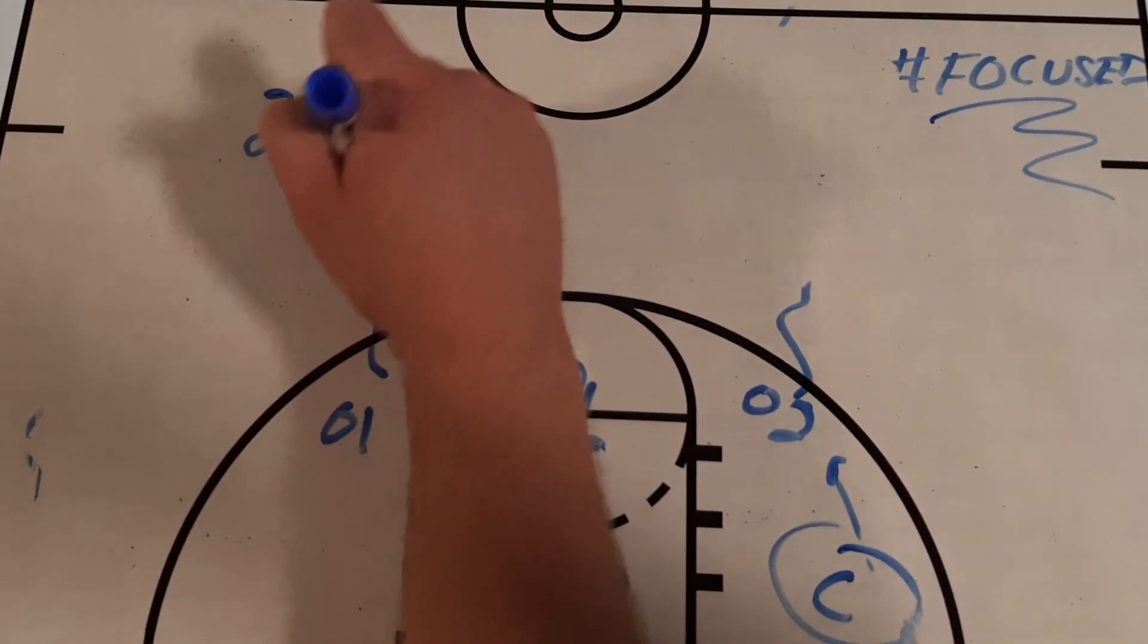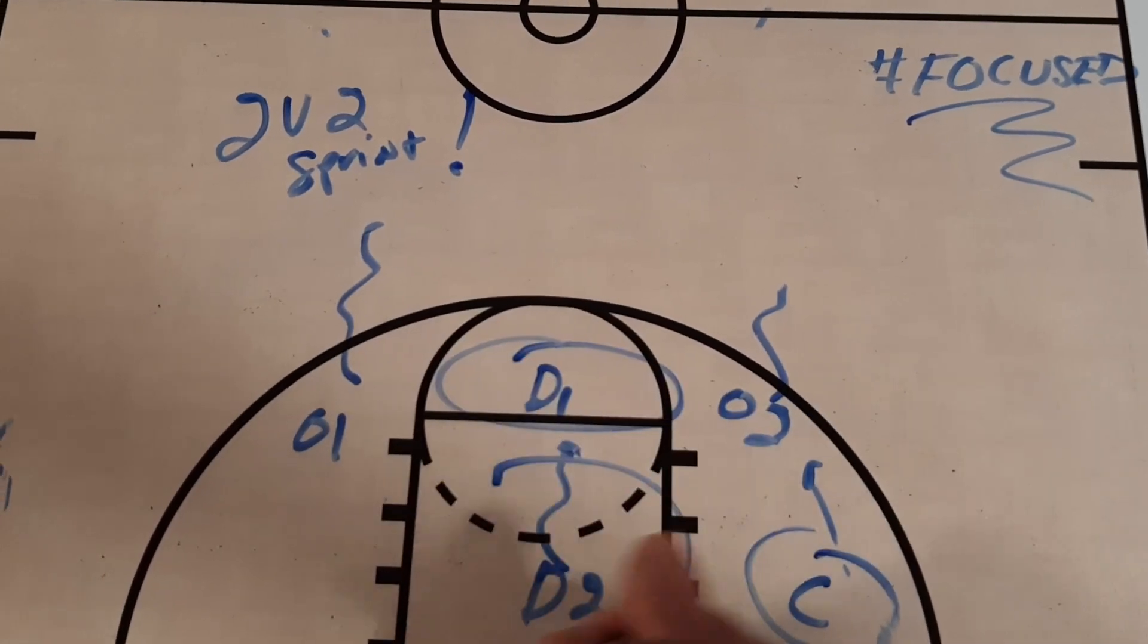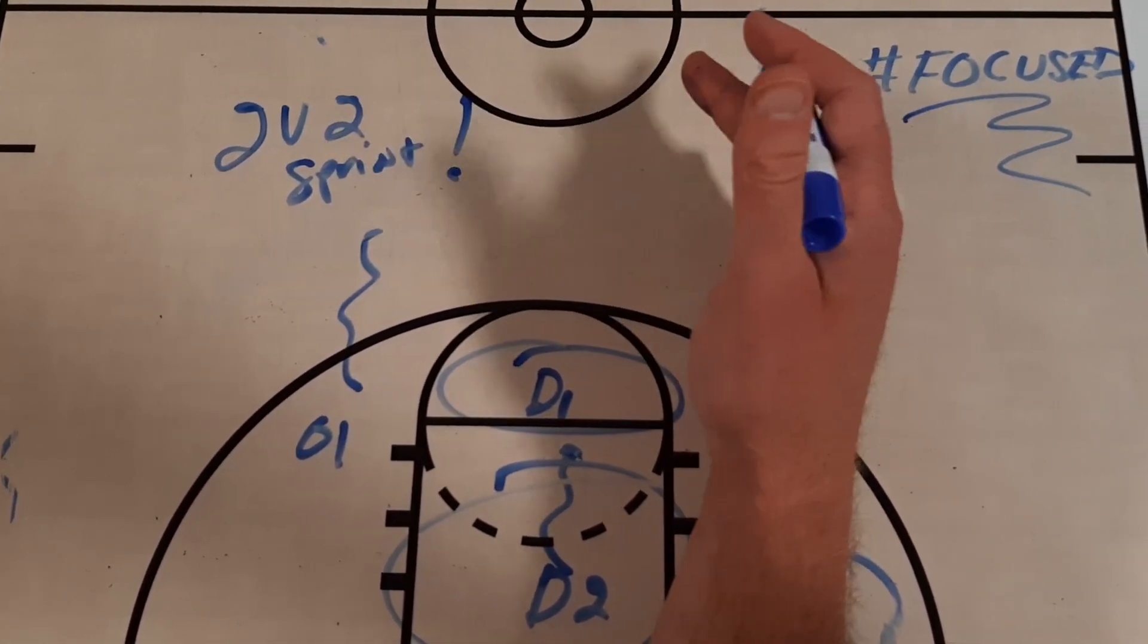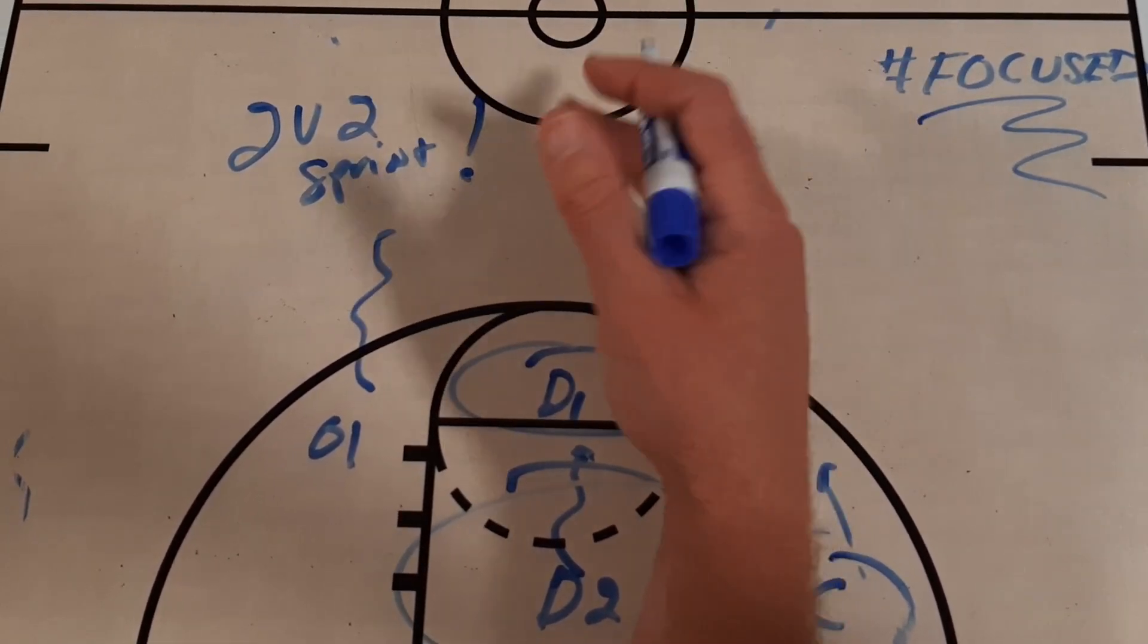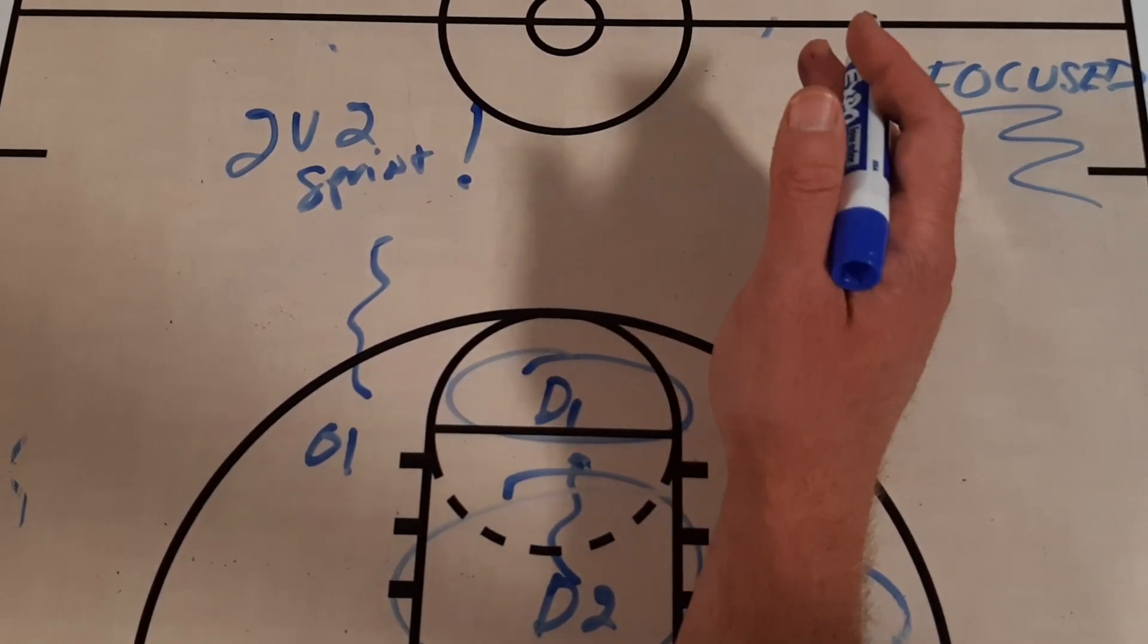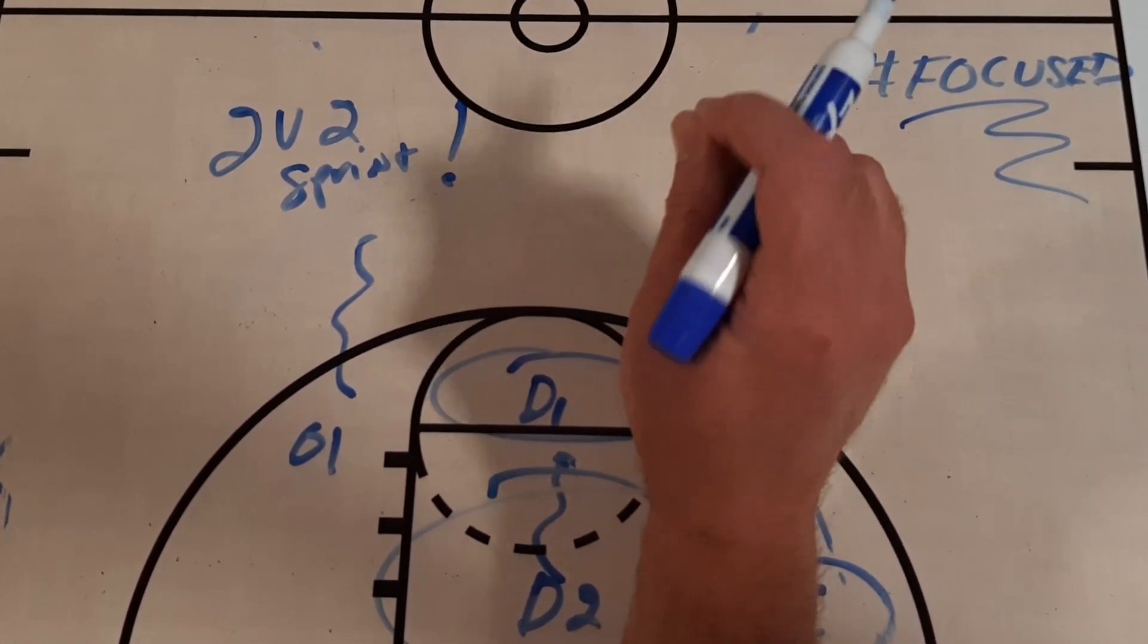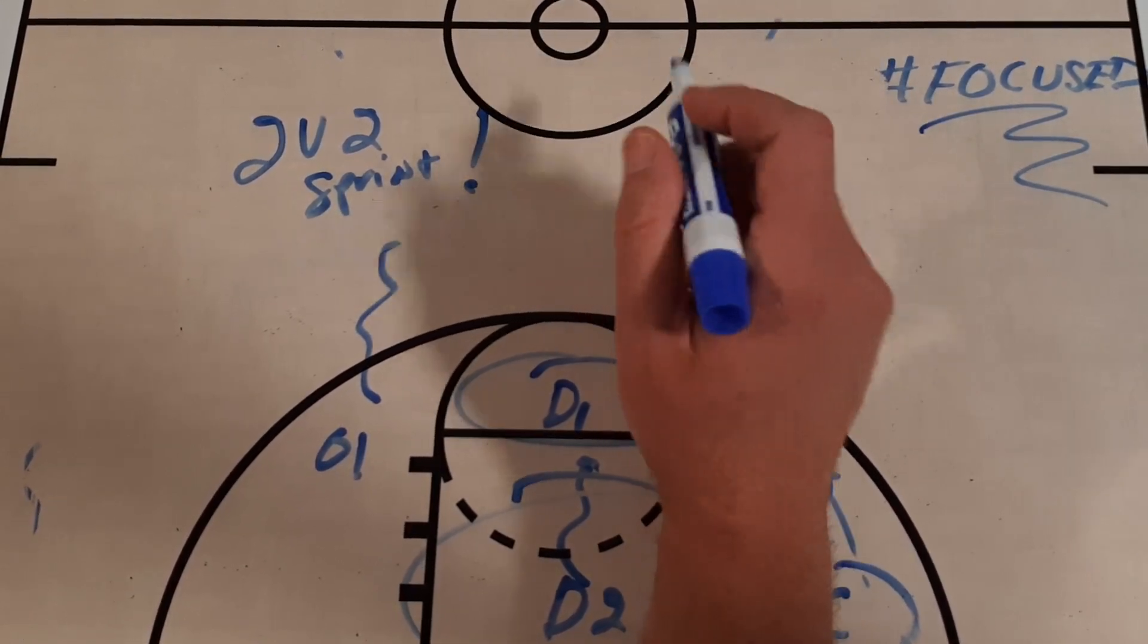This is two versus two sprint. You can see where I got the name from, because these defenders had better learn to sprint back and get in position. Keep score. You could make it turnovers or minus a point. Every basket is worth a point or two points. You can highlight certain things that you want to do in this particular drill, and earn points for those as well. So two versus two sprint, great transition game, a la almost an SSG that you can use with your team.